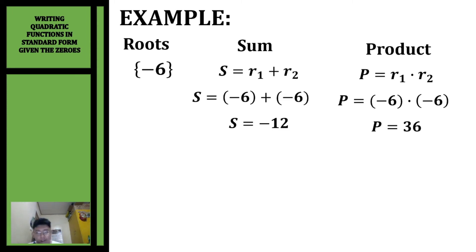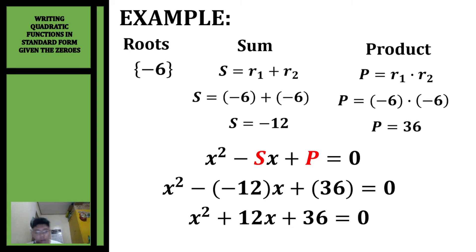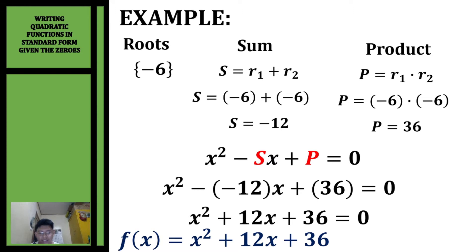Substituting into the formula x squared minus sx plus p equals zero, we get x squared minus negative 12x plus 36. Simplifying, x squared plus 12x plus 36 equals zero. Converting to a function: f(x) = x² + 12x + 36.